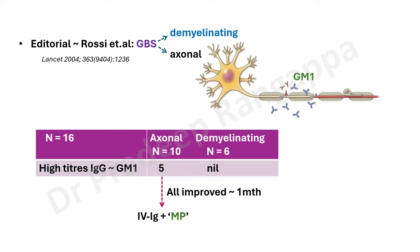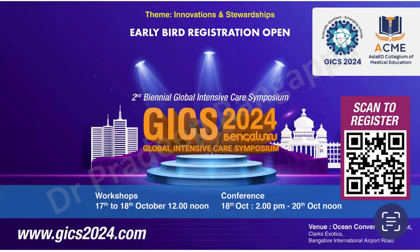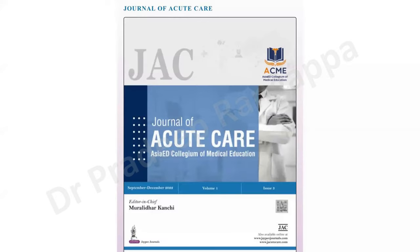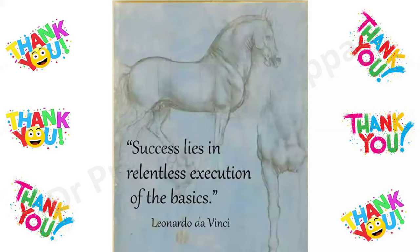So in summary, I spoke about ICU-acquired weakness, then the general overview of neuromuscular disorders, and then at length about the approach to Guillain-Barre syndrome including diagnostic tools and therapeutic options. Myasthenia will be covered in a separate video to be uploaded. I request all of you to attend our Global Intensive Care Symposium from 17th to 18th October, and submit your valuable work to the Journal of Acute Care. Thank you one and all.